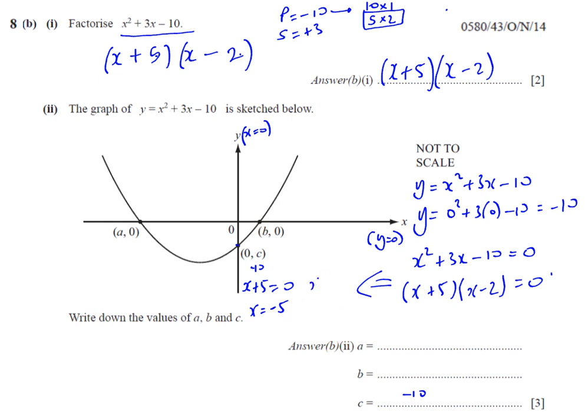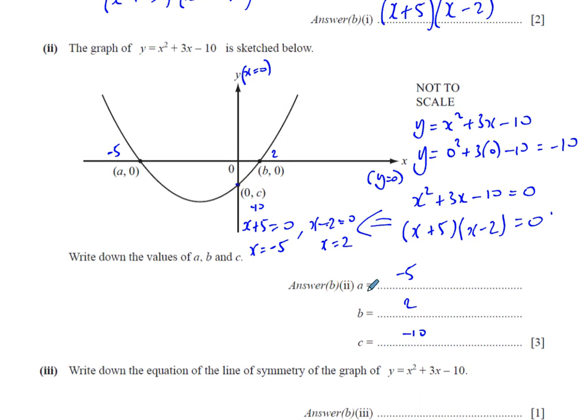Or x minus 2 is equal to 0, in which case x is going to be 2. So of course, if you look at a and b, b must be 2 and a must be negative 5, because a is on the negative side of the x axis. So a is negative 5 and b is 2. Okay, that's part 2.